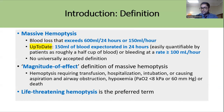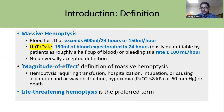Massive Hemoptysis can be defined as a blood loss that exceeds more than 600 ml in 24 hours or 150 ml per hour. According to UpToDate, about 150 ml of blood expectorated in 24 hours is considered Massive Hemoptysis, or bleeding at a rate more than 100 ml per hour. However, there is no universally accepted definition.